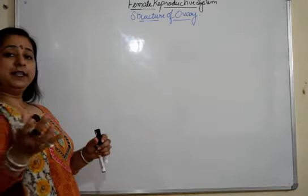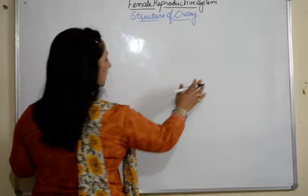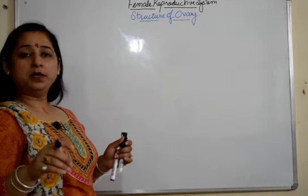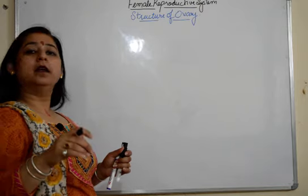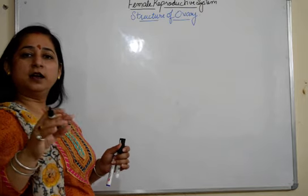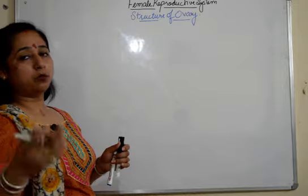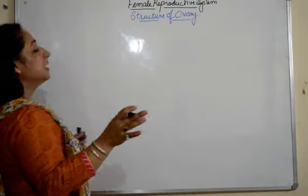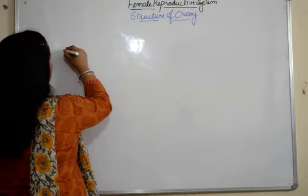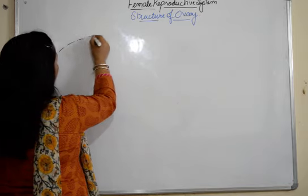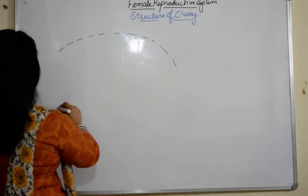Starting with the structure of the ovary: there is a pair of ovaries which are abdominal and present inside the body of the female. This is different from males, where the testes are present outside the body. Here the ovaries are abdominal.